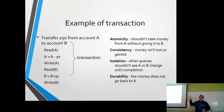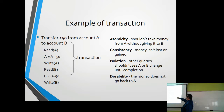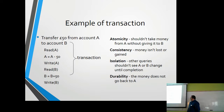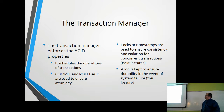Here's the bank transfer example applying ACID: transferring 50 pounds from account A to account B — read A, A minus 50, write A, read B, B plus 50, write B. Atomicity: we shouldn't take money from A without giving it to B. Consistency: money is not lost or gained. Isolation: other queries shouldn't see A and B changes until done. Durability: the money does not go back to A. The transaction manager enforces ACID properties and schedules operations.